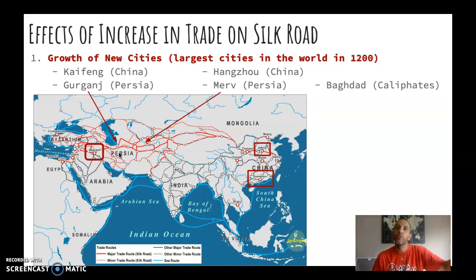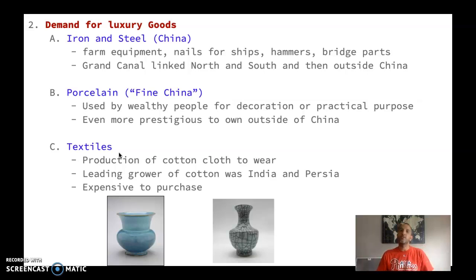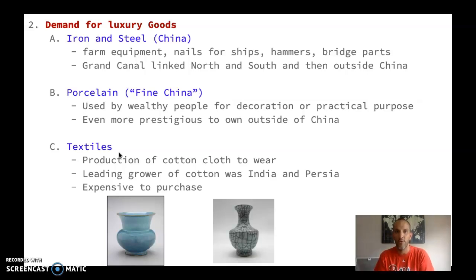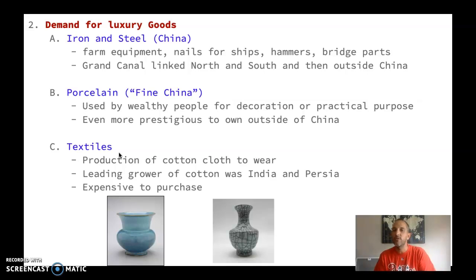As people are trading, they're going to settle in urban areas — merchants are going to settle there, and people selling products move there because they know it's a way to increase their goods and profit. Another effect of increased trade on the Silk Road is an increased demand for luxury goods. Luxury goods are things that the everyday ordinary person can't afford. Wealthy merchants, wealthy artisans, wealthy Confucian scholars in China, people outside China in the Islamic Caliphate — people who can afford these goods. They're not something you need to survive; they're luxurious, to show off how powerful you are.